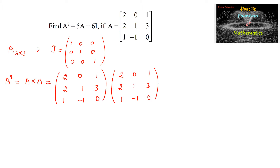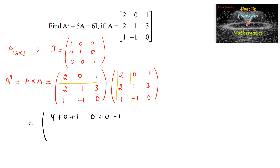Processing the multiplication row by column. First row with first column: 2×2 + 0×2 + 1×1 = 4+0+1 = 5. First row with second column: 2×0 + 0×1 + 1×(−1) = 0+0−1 = −1. First row with third column: 2×1 + 0×3 + 1×0 = 2+0+0 = 2.